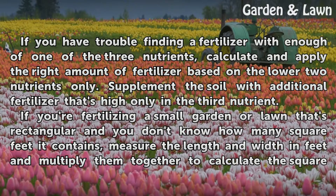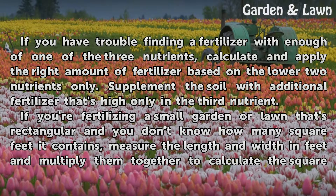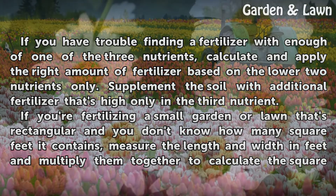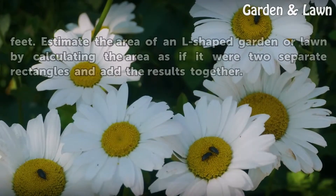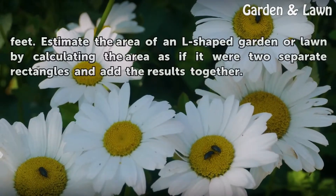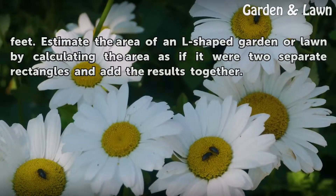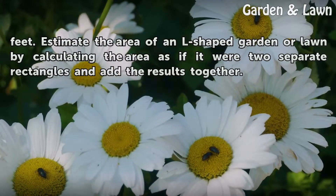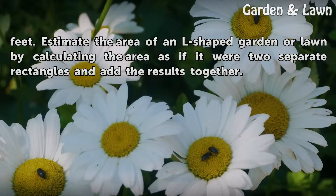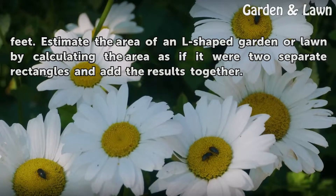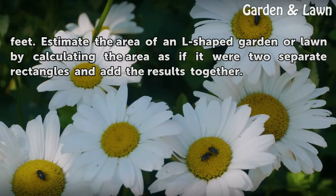If you're fertilizing a small garden or lawn that's rectangular and you don't know how many square feet it contains, measure the length and width in feet and multiply them together to calculate the square feet. Estimate the area of an L-shaped garden or lawn by calculating the area as if it were two separate rectangles and add the results together.